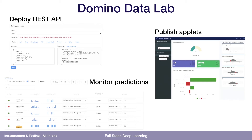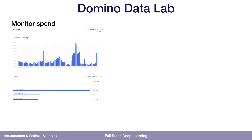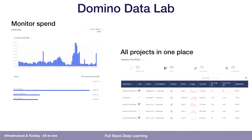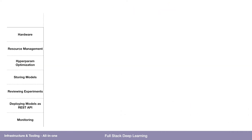You can publish little applets, kind of like Streamlit — if you've got a data science model working and want to show it to another team or your boss, you can quickly get a server going in Domino Data Lab and point them to the URL without figuring out the infrastructure yourself. For managers, you can monitor your team's spend — see how much money you're spending, how many instances are being launched, who's launching the most, all projects in one place with usage metrics, costs, stakeholders, and notes.